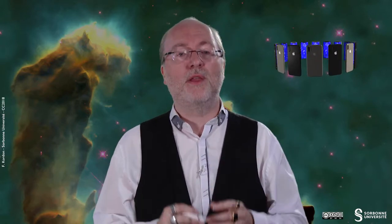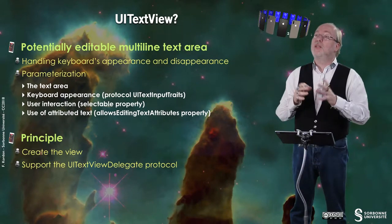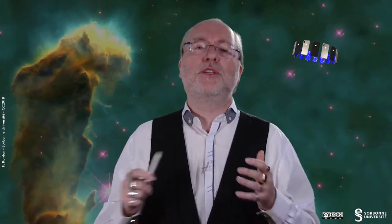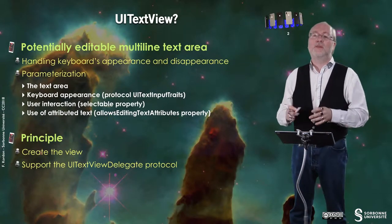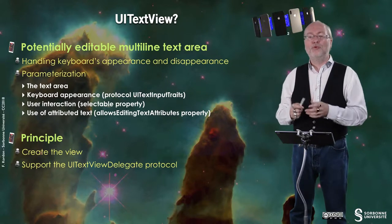There is a selectable property that allows the user to select some text, maybe for doing cut and paste — you can disable that. You also have an editable property that allows the user to edit, and you can set it to false, and then it's just a multi-line display. And you can use AttributedText, with a dedicated attribute that allows you to do so.